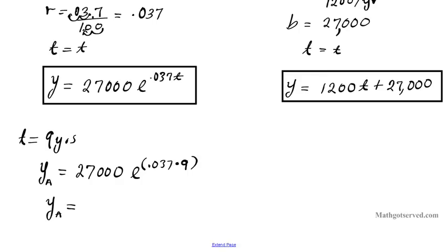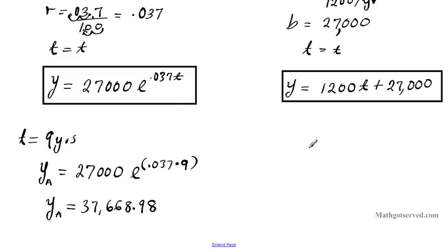Plugging this into our calculator, account A gives us approximately $37,668.98 after nine years using this compound interest rate of 0.037.